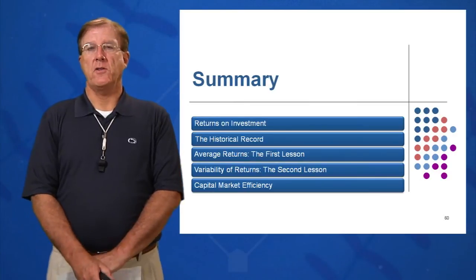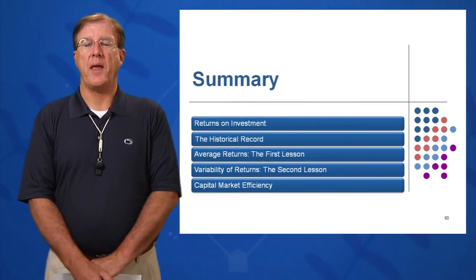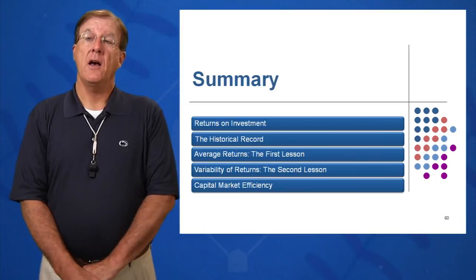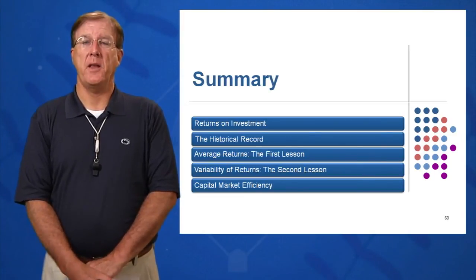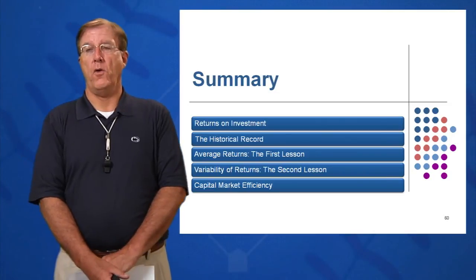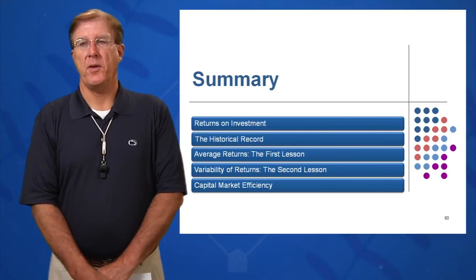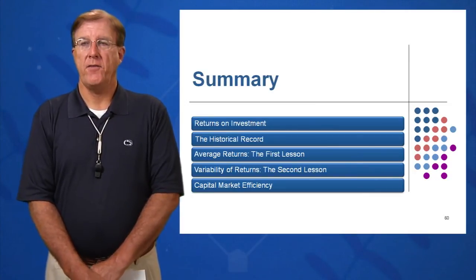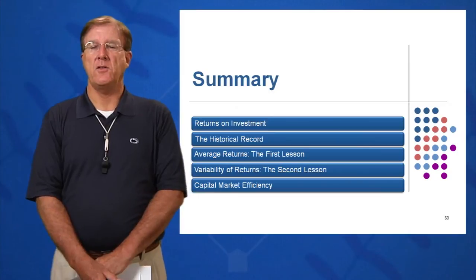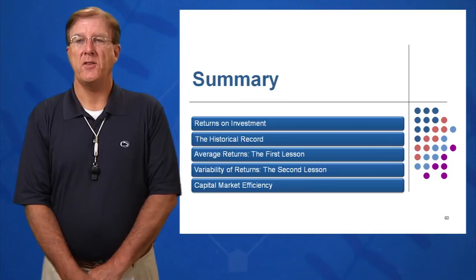We hope you've enjoyed this very interesting session on lessons from capital market history. We've had five learning objectives: how to calculate return on investment in percentage form and in total form. Total return is equal to dividend yield plus capital gains yield. We've also looked at the historical record as per the study of Ibbotson and Sinkfeld, who studied five primary instruments and how those instruments have done over the past 80-plus years.